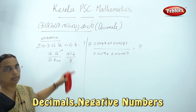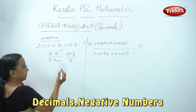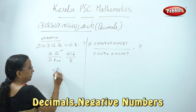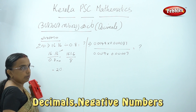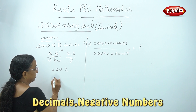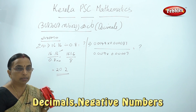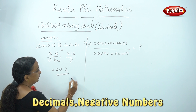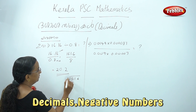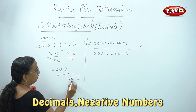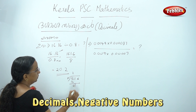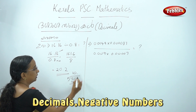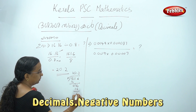Now, let's do this. 16.6 by 8. Here, we have 20.2 by 8. Let's do this. Here, we have 7. Here, we have 16.1 by 8. Here, we have 16.2 by 8.